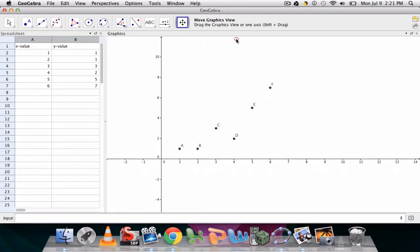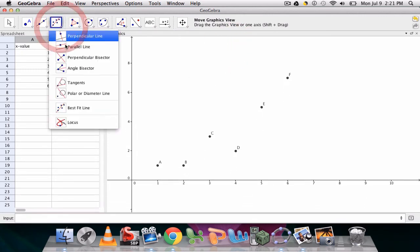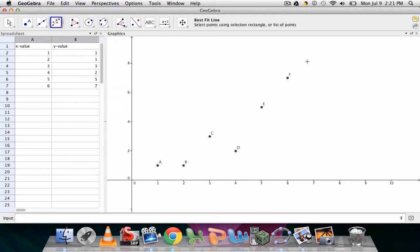So we have this nice layout of points right here. All we have to do is click our tool over here for best fit line, and then we can drag around the points and it generates the line.